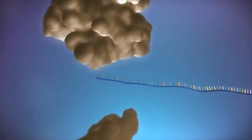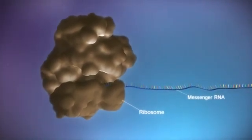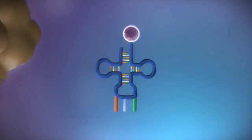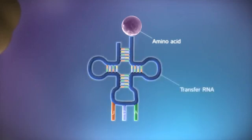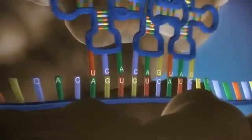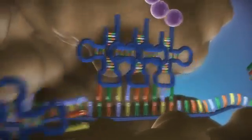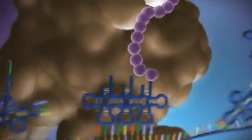Protein factories in the cytoplasm, called ribosomes, bind to the messenger RNA. The ribosome reads the code in the messenger RNA to produce a chain made up of amino acids. There are 20 different types of amino acid. Transfer RNA molecules carry the amino acids to the ribosome. The messenger RNA is read three bases at a time. As each triplet is read, a transfer RNA delivers the corresponding amino acid.